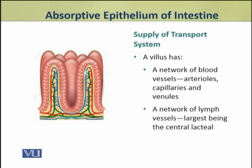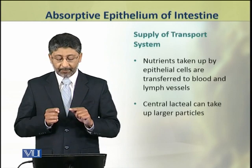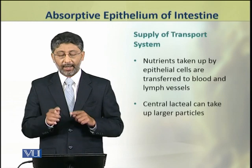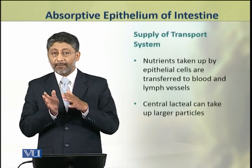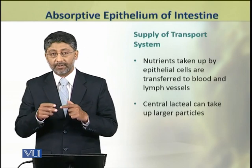Now we shall discuss the supply of transport system to the villi and to the small intestine. A villus has a network of blood vessels inside it, consisting of arterioles, capillaries, and venules. This entire network is present in the center of a villus. In addition, each villus also has a network of lymph vessels, the largest of which is a central lacteal, which supplies each villus. Nutrients taken up by the epithelial cells are transferred to blood and lymph vessels inside the villi. The central lacteal can take up comparatively larger particles as compared to the blood circulatory capillaries.